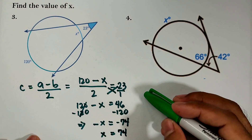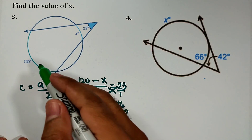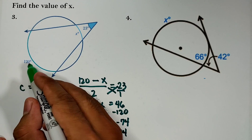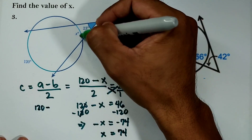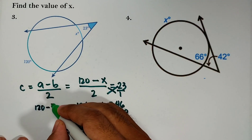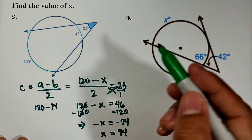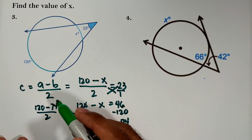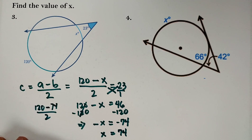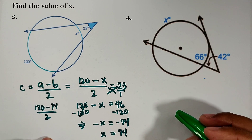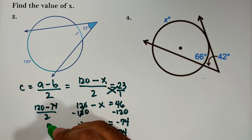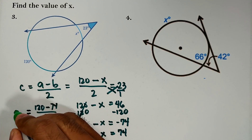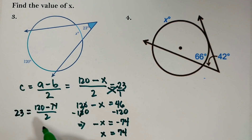To check: using the formula, (120 − 74) / 2 = 46 / 2 = 23 degrees, which matches the given angle. So 74 is correct.